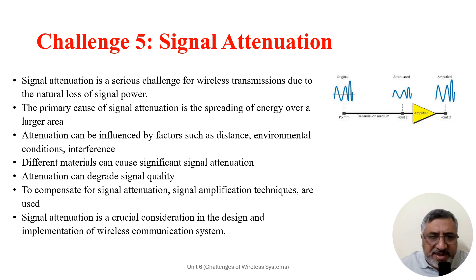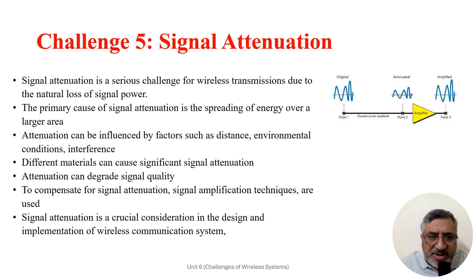Attenuation can be influenced by many factors such as distance, environmental conditions, interference, and the properties of the transmission medium itself. In wireless communication, signal attenuation is typically more pronounced over longer distances, especially in free space where signal energy spreads out in all directions.